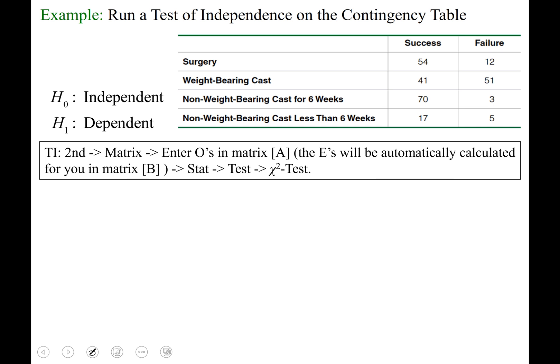And you're just going to start typing in the data now. This matrix is a 4 by 2, so if you want to name it 4 by 2, then it'll populate for you there. And you just start typing those in. So 54, arrow over for 12, arrow down and over for 41, arrow over for 51.